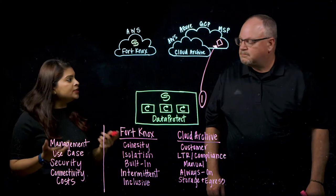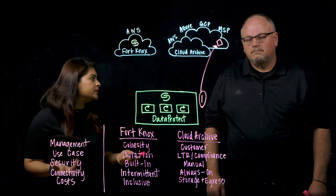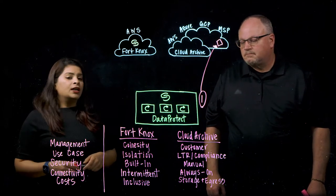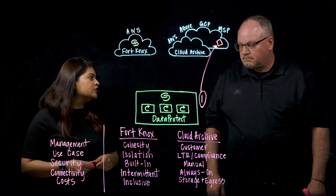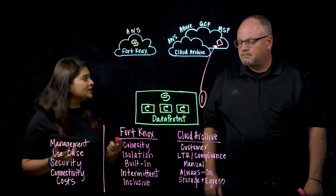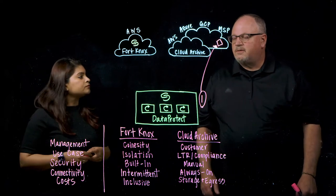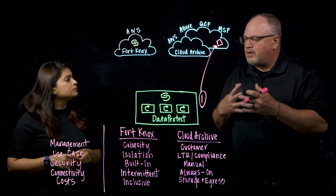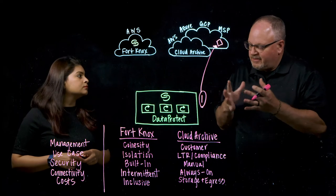You can see how both solutions create an offsite copy of data, but for different purposes. Depending on your use case, you could use Cloud Archive for compliance or long-term retention use cases, or Fort Knox if you're trying to protect critical data against ransomware and other security threats. So you mentioned security before — can you outline how Fort Knox uses different types of security to enable that securing of data?